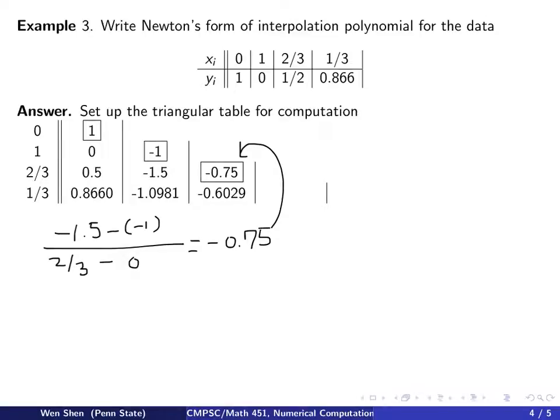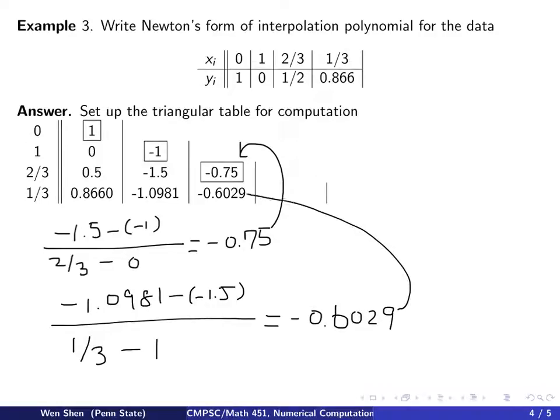And similarly, the value here shall be computed by taking this minus that. That's pretty obvious. But what's in the denominator? It shall be 1/3 minus 1. You have to skip 1 x in between. So that will be negative 1.0981 minus negative 1.5 over 1/3 minus 1. And if you work out, it's about negative 0.6029.